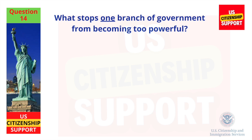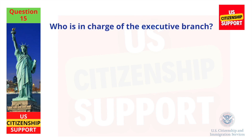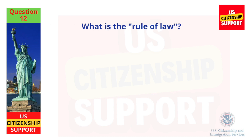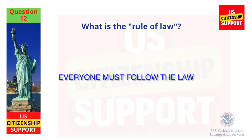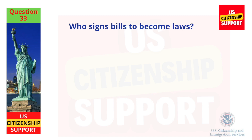What stops one branch of government from becoming too powerful? Checks and balances. Who is in charge of the executive branch? The President. What is the rule of law? Everyone must follow the law. Who signs bills to become laws? The President.